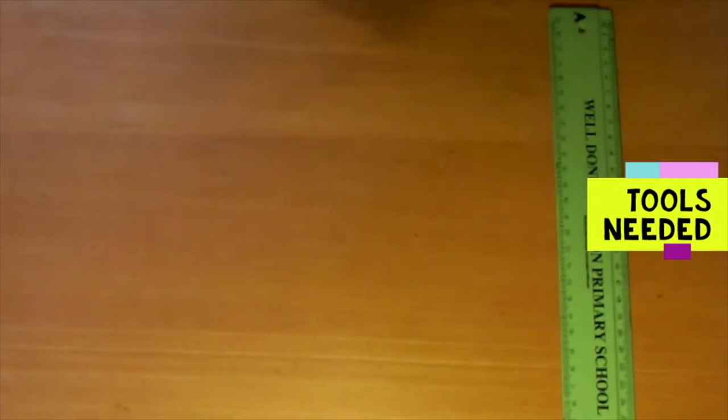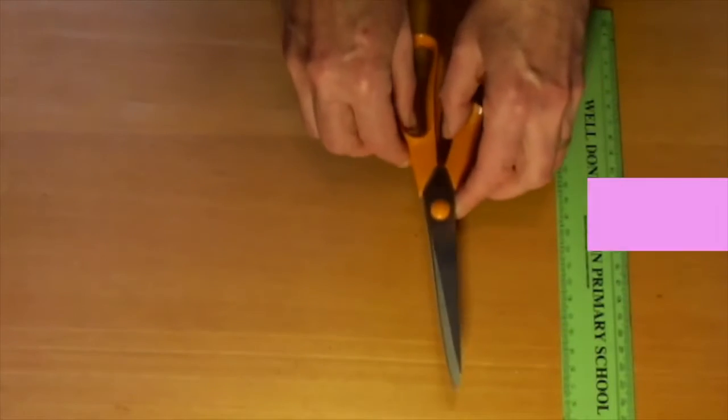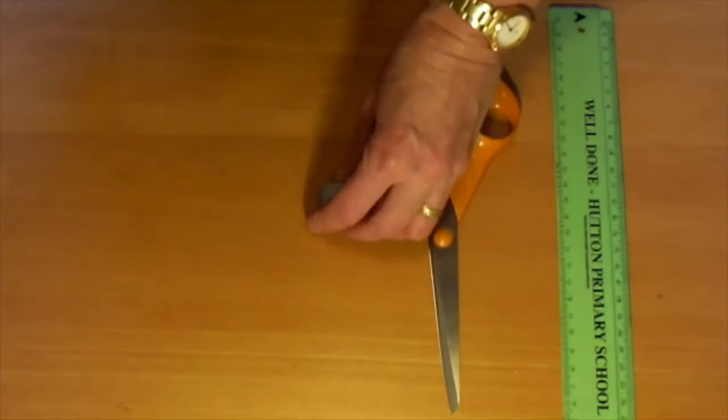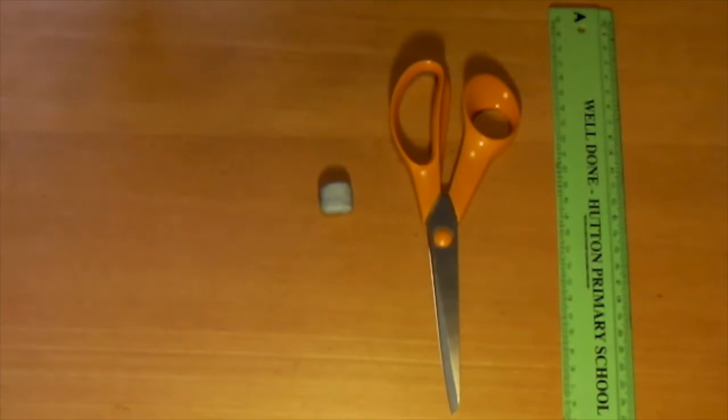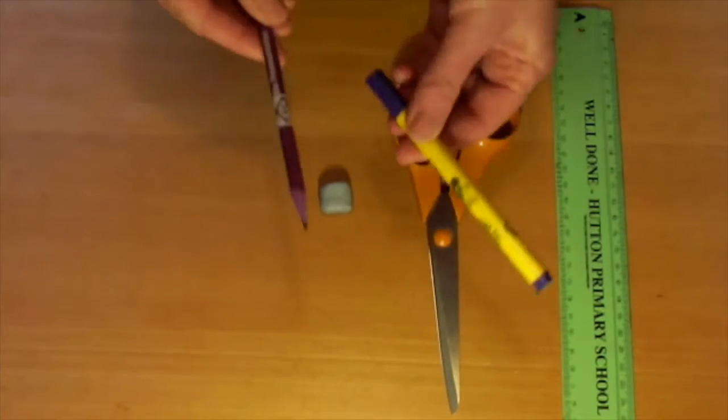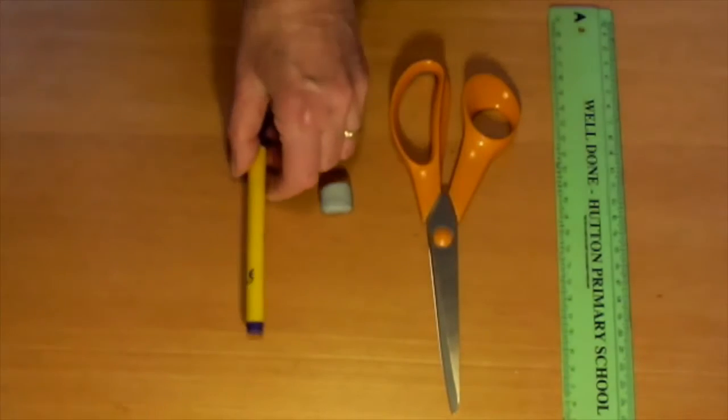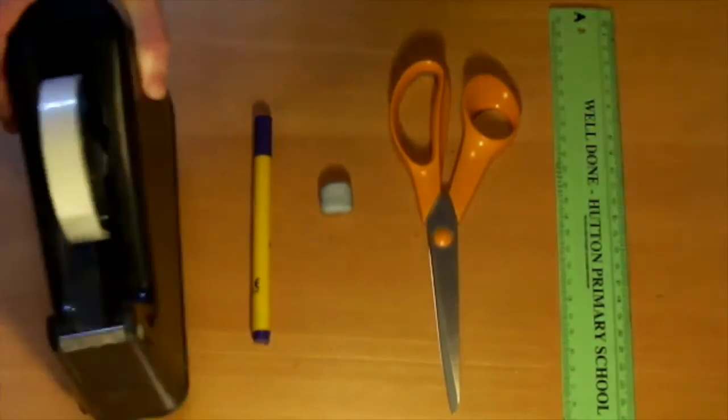You'll also need a ruler, a pair of big scissors, some blue tack or modelling clay or play-doh would do, a round felt tip pen. It's got to be bigger diameter than the pencil and some sellotape.